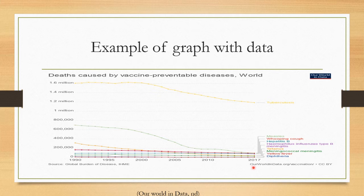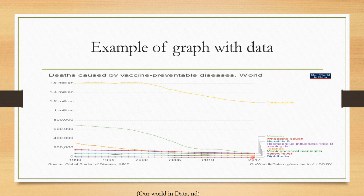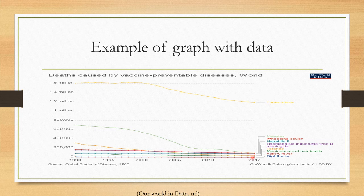This chart shows data on deaths caused by preventable diseases in the world from 1990 to 2017. You can see diseases like measles, hepatitis B, tetanus, and tuberculosis among others. Some like tetanus are decreasing, while others like tuberculosis are still increasing. This shows that work by various stakeholders has reduced some numbers, but full control has not yet been achieved. Thank you for your time.